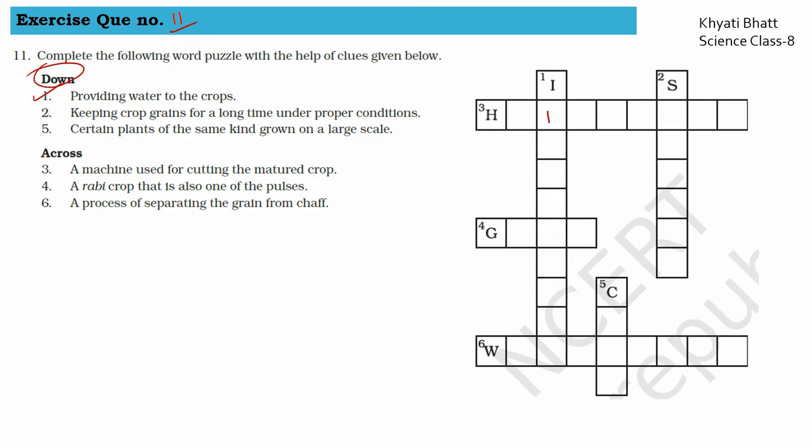Second, keeping crop grains for long time under proper conditions, so that is storage. Then the fifth clue is certain plants of same kind grown on a large scale. It starts with C, so it is crop.